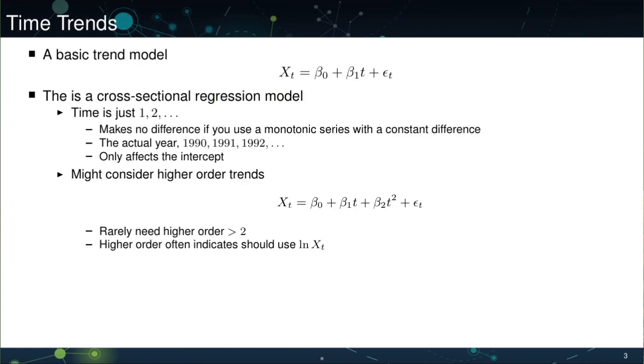Time trend models are fundamentally very simple. A basic time trend model has a constant, beta naught, and a time trend, beta 1 multiplied by t, which is the time trending variable. It's typical to use the values 1, 2, and so on up to cap t to capture the time trend, although it makes no difference in terms of the sensitivity to the time trend if you use other values such as the year. However, the only condition is that these values need to be regularly spaced, or at least reflect the difference of time in the actual observed observations.